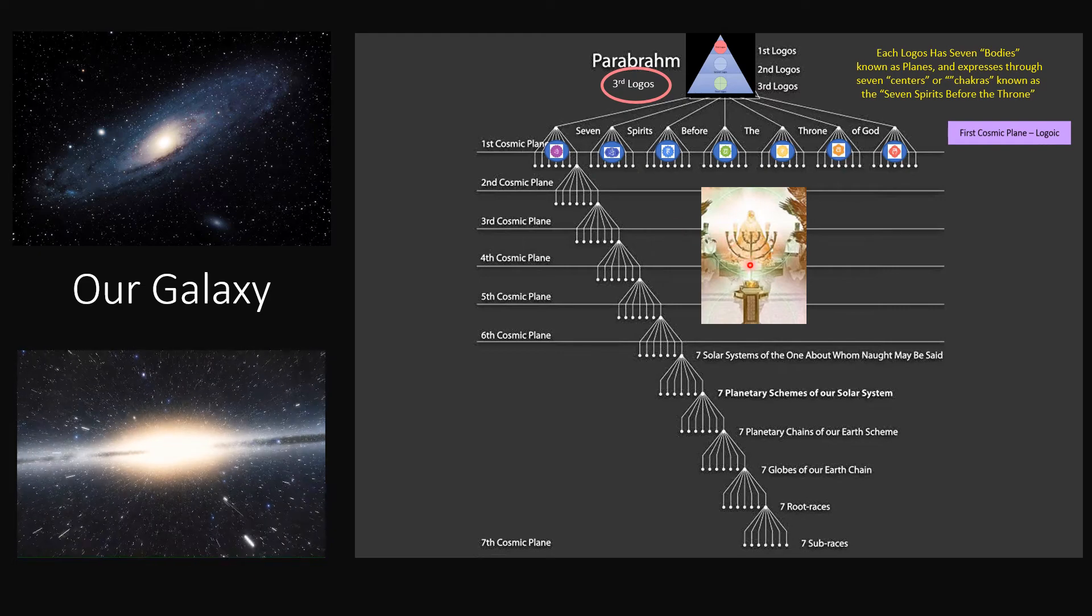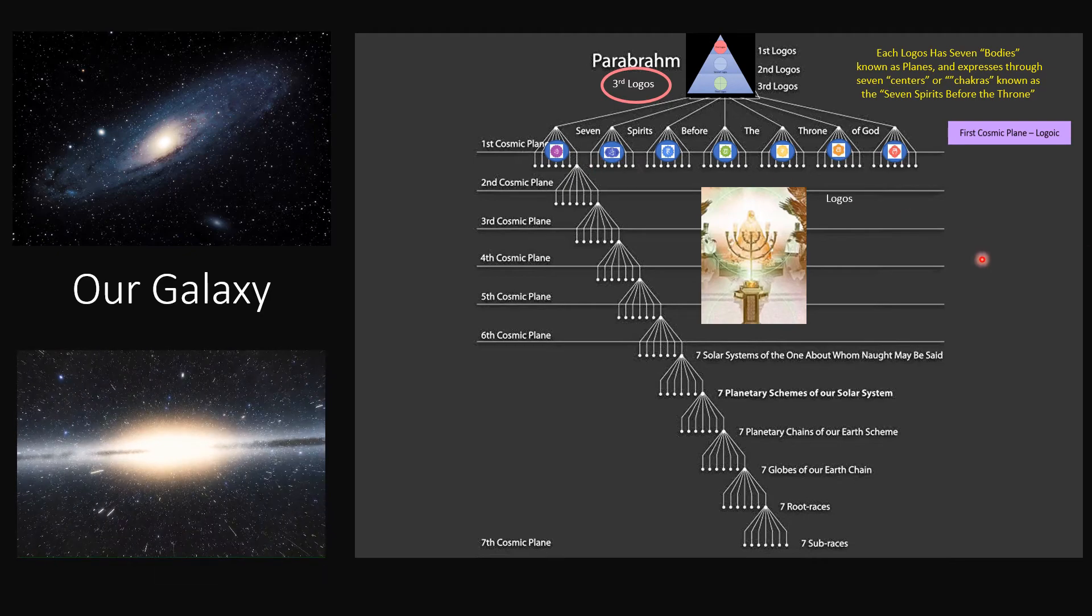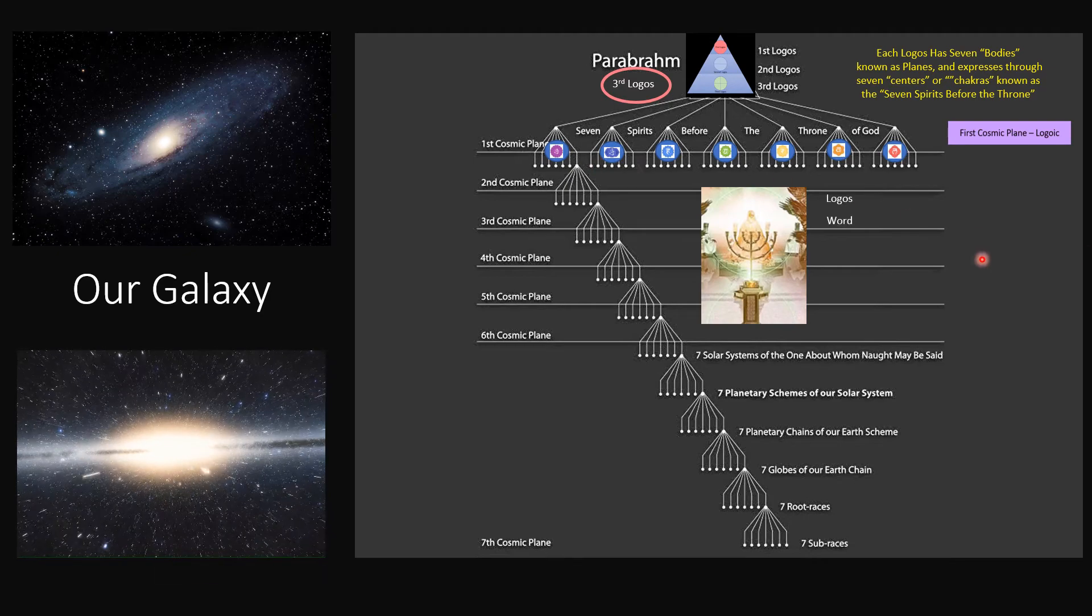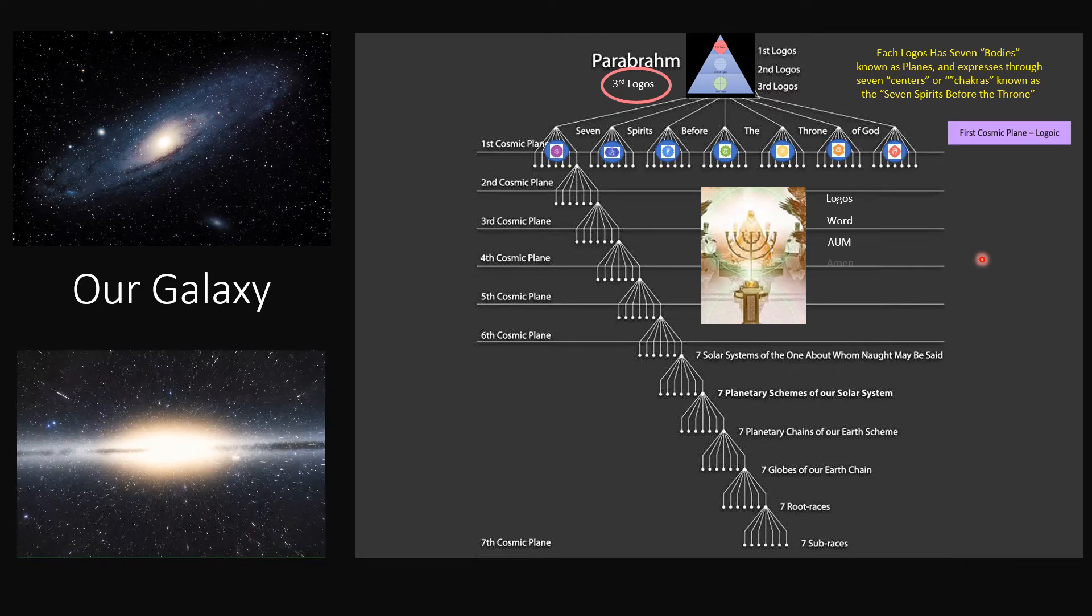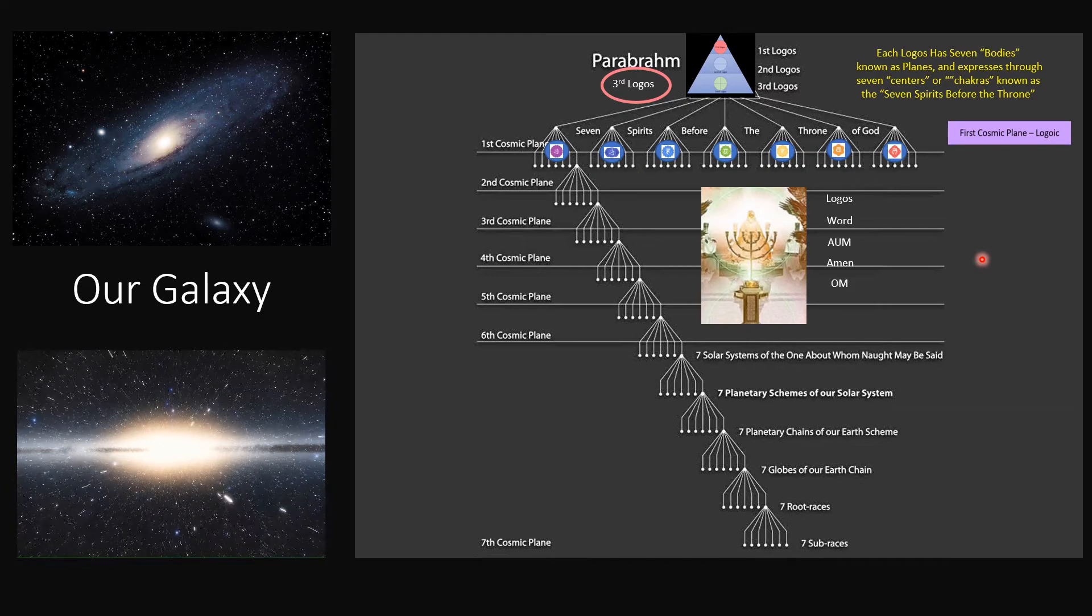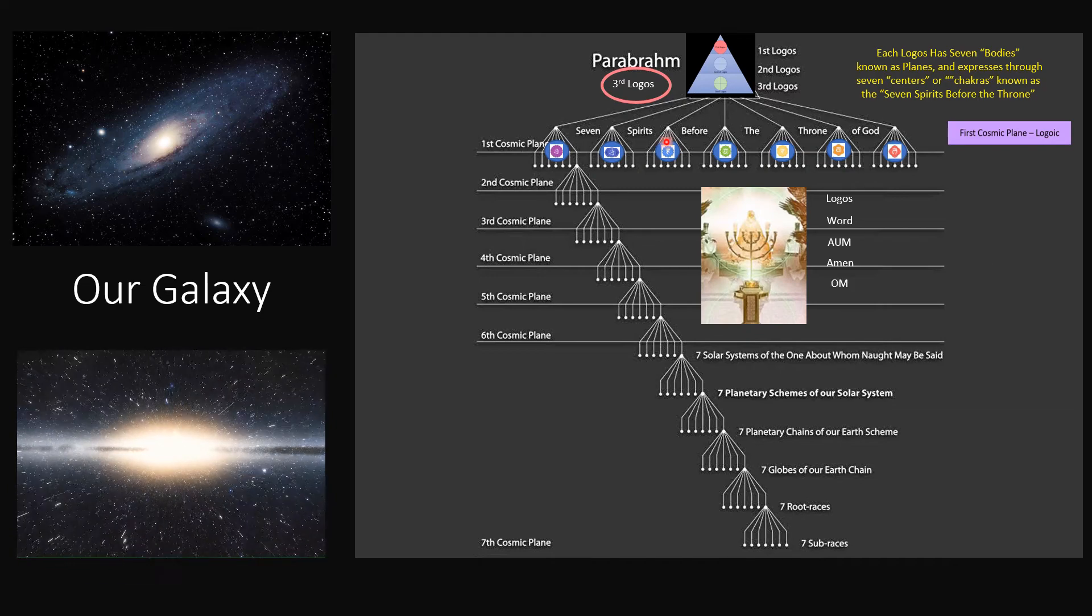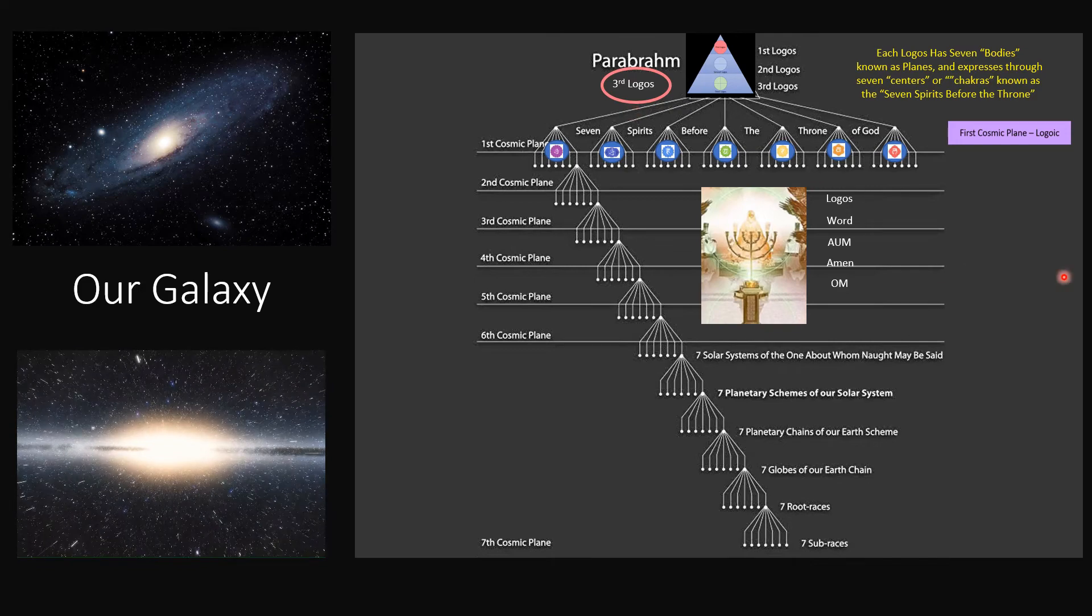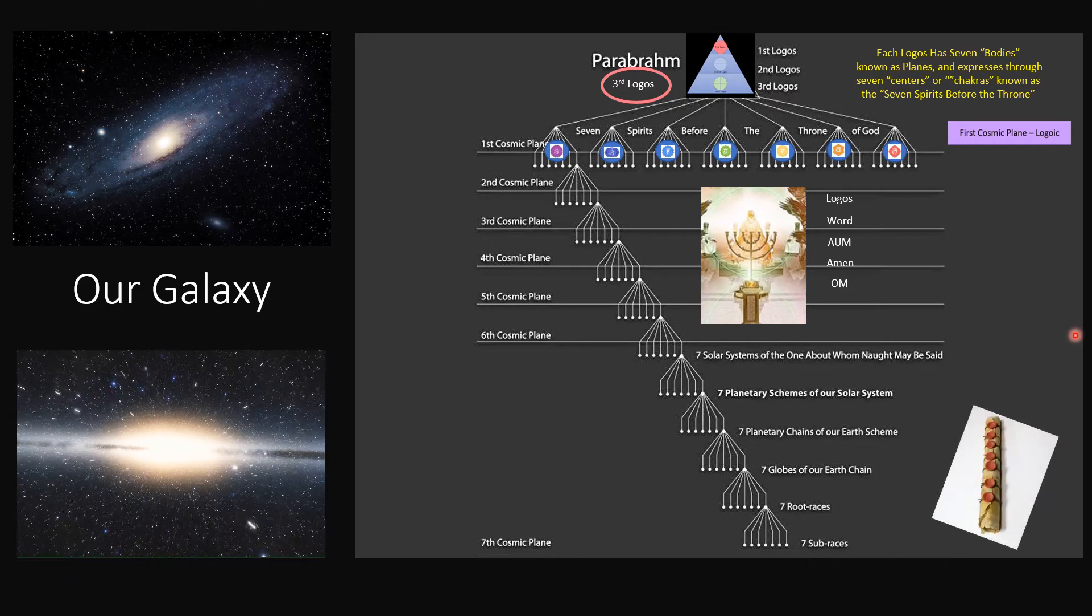The third Logos is essentially represented by green. And here we see the seven spirits before the throne represented in the seven aspects of this candelabra. And you can't see it, but if this was large enough you would see that these are lit. Now in Revelations, this particular Logos, which means word, is the AUM. That was turned into the Amen in Christianity. It's also known as the Om. And that's essentially the name for this third Logos, the Aum, the Amen or the Om.